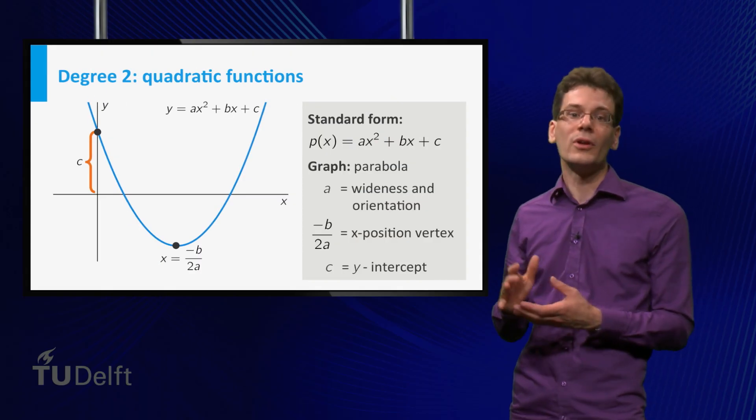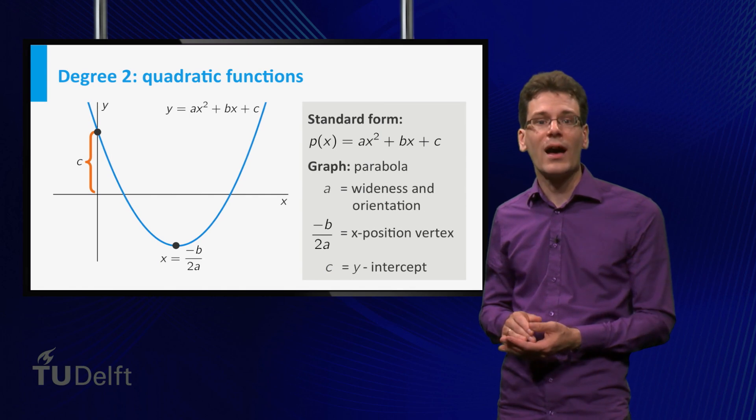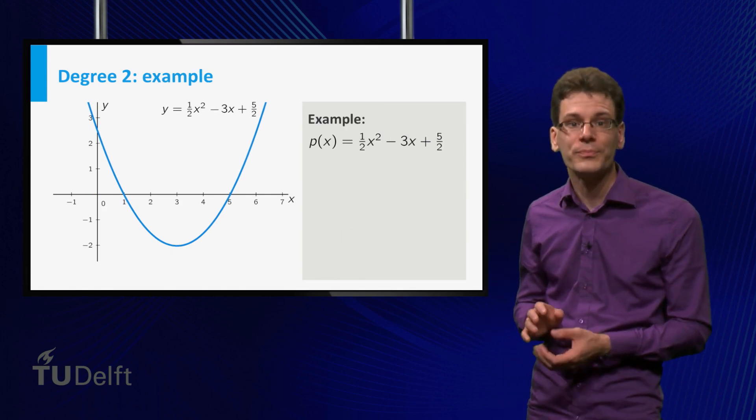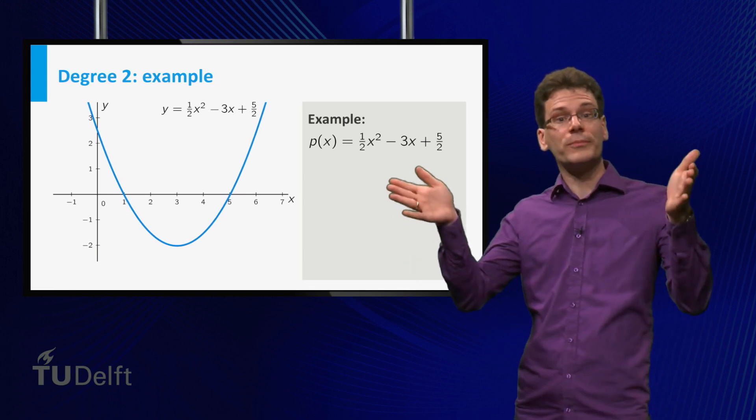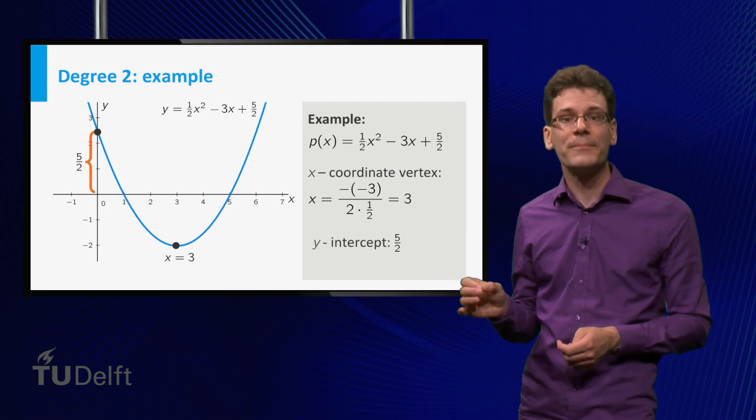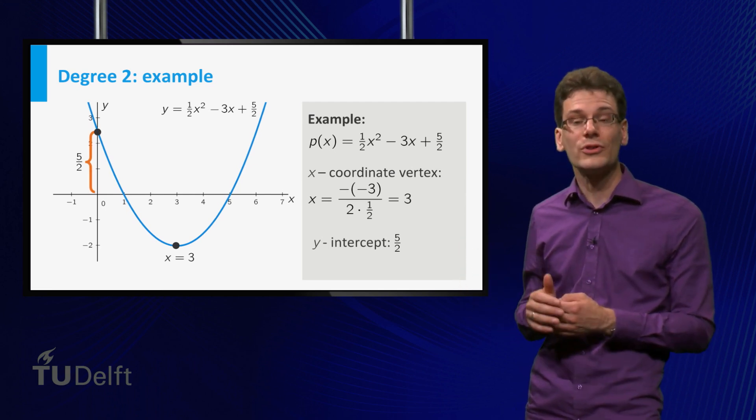Let me show you an example. p(x) equal to 1 half times x squared minus 3x plus 5 over 2. Indeed, you see that the graph opens upward. The x-coordinate of the vertex equals minus b over 2a, and the y-intercept equals the constant term.